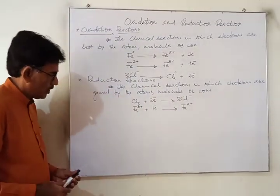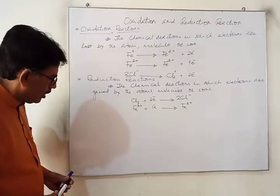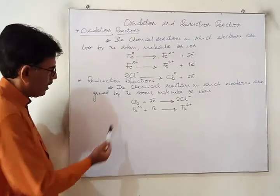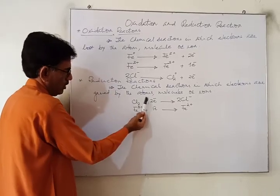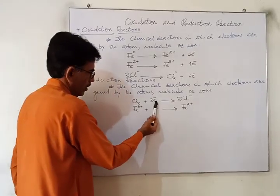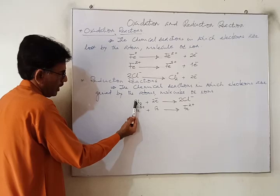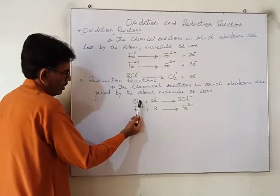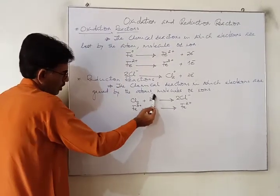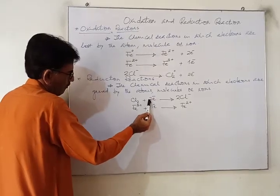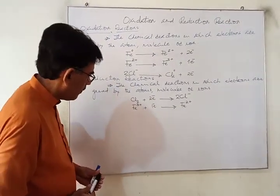We can express this by giving an example. We have a molecule of chlorine. The chlorine molecule can gain electrons, and each chlorine atom can gain one electron. So for the chlorine molecule we put a coefficient of two, and it is converted into chloride ion.